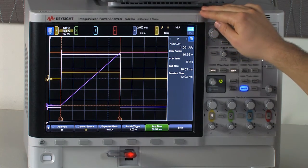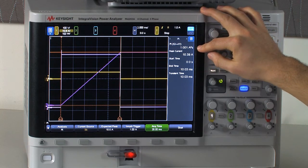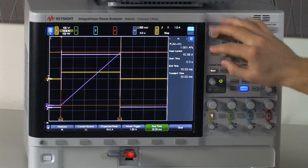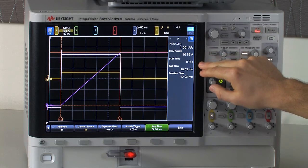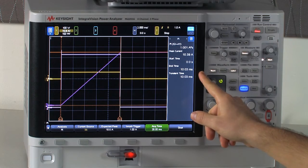The top number is the I squared T. We have one amp squared seconds. The peak current is the peak of your current transient at 10.39 amps. And the start time and the end time refer to these cursors respectively. And the transient time is just the difference between them.